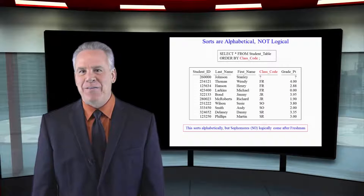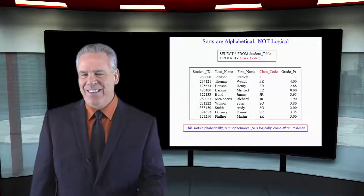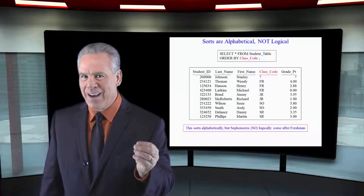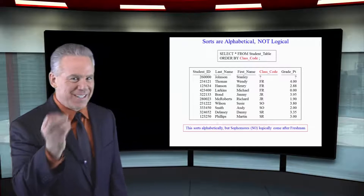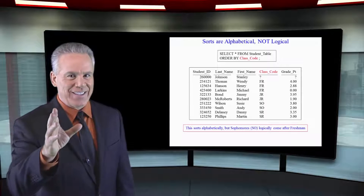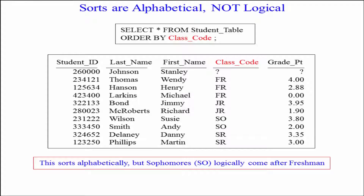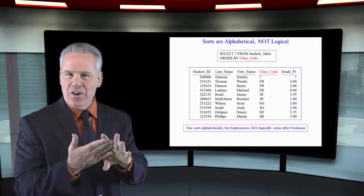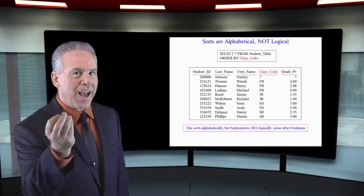I get a lot of advanced SQL students in my classes, and this is one I set them up on, so they usually miss this. Take a look at this. I'm going to say SELECT everything from the student table, ORDER BY class code, and as you can see the null comes first, then the freshmen, then the juniors, the sophomores, and the seniors. You see it's alphabetic — but didn't you go to high school? Isn't it freshman, sophomore, junior, and senior? Sort it by that.